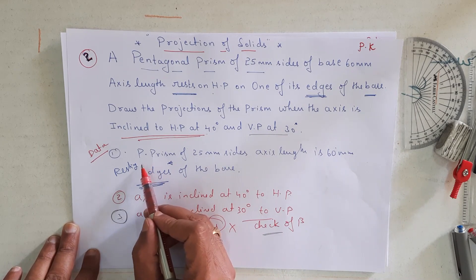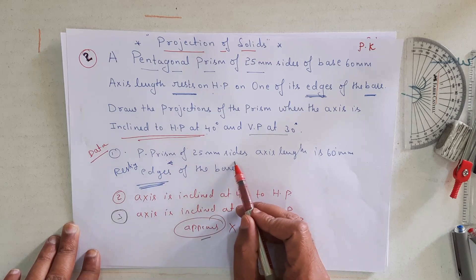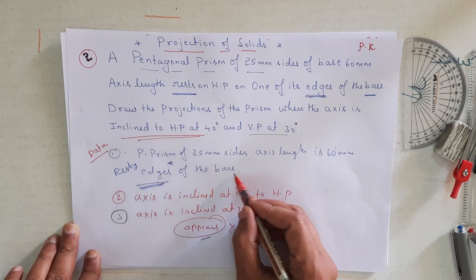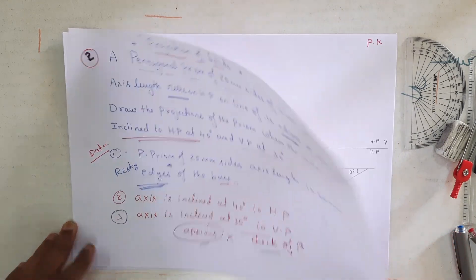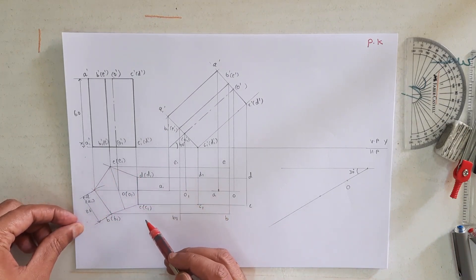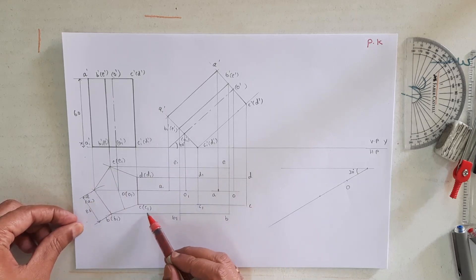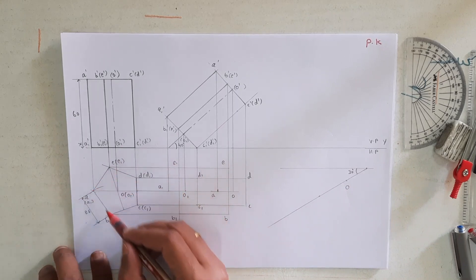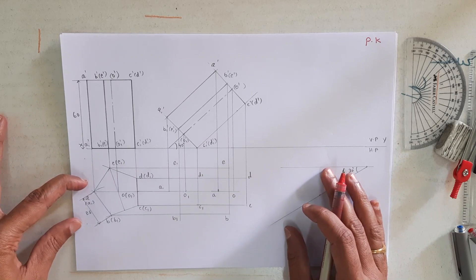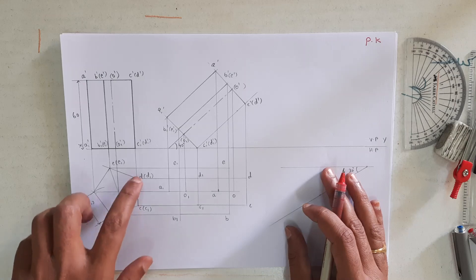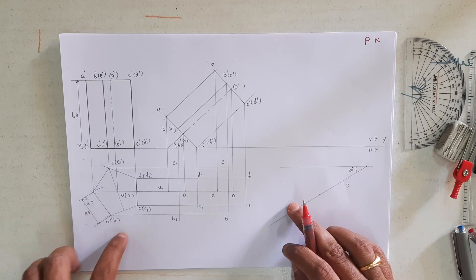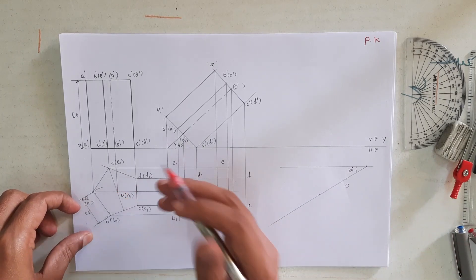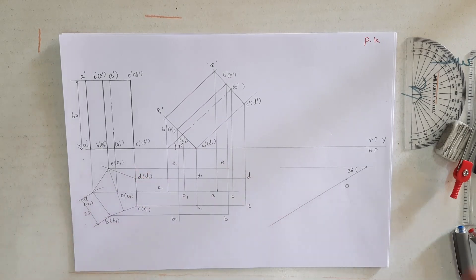The first data required is step number one: the type of solid. Here it is a pentagonal prism of 25 mm sides of base and 60 mm axis length, resting on one of its edges of the base. I have drawn a pentagon with one of its edges — C1 and D1 — to the right side. There are totally 10 corners: A, B, C, D, E represent the top corners, whereas A1, B1, C1, D1, E1 represent the bottom face corners, placed inside parentheses.